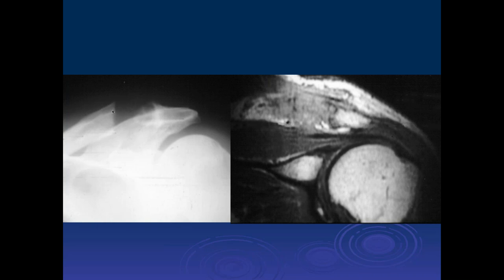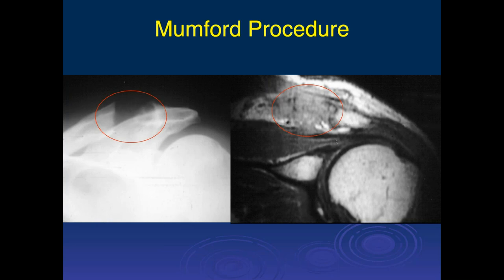Correction: this was actually my ex-father-in-law, who did have a Mumford procedure. On plain films you can see the surgical removal of the distal clavicle, and on MR scan you see the loss of the distal clavicle. Importantly, there is no longer impingement upon the supraspinatus. The modern technique uses an oblique cut of the clavicle rather than a perpendicular 90-degree cut—that's now the recommended approach.